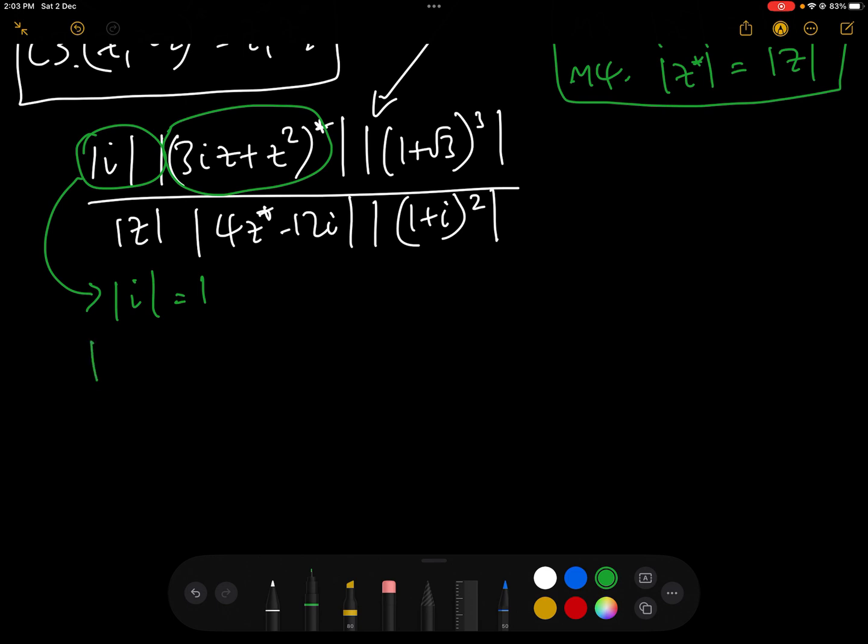Now let's go with the second one, which is the modulus of 3iz add z squared conjugate. Okay, well, we can take z out from inside this bracket here. So that equals mod z times 3i add z, conjugate. So all we've done is taken the z out.